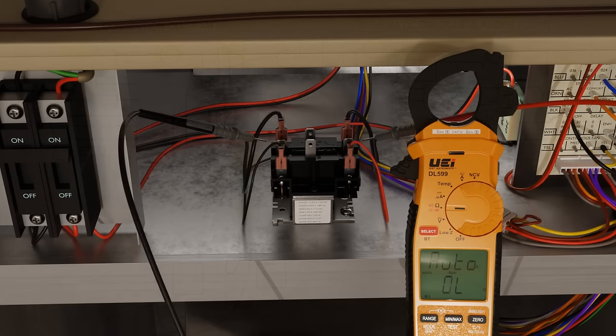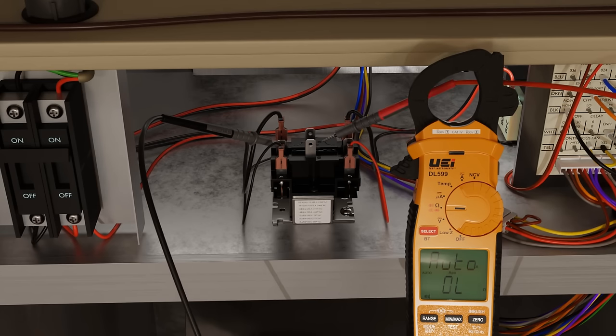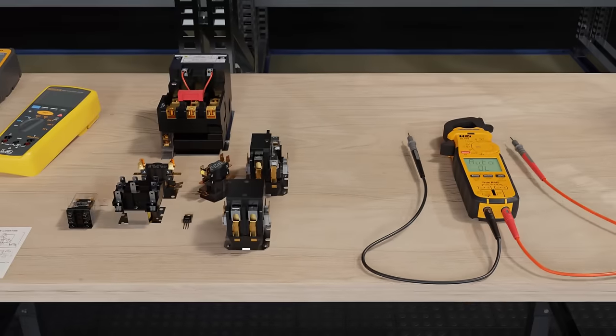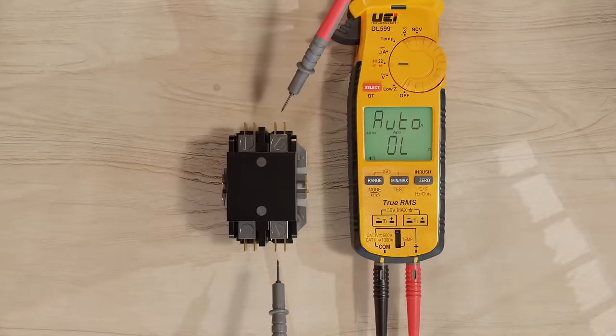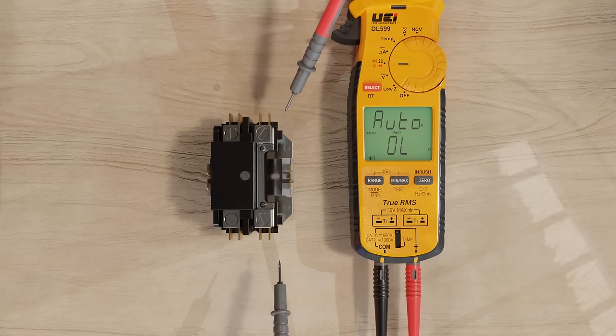What was normally open now goes closed when energized. Again, using an ohmmeter and a continuity test to show this. Now showing the same thing on a bench with the two-pole contactor and the one-plus contactor.